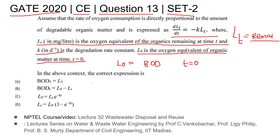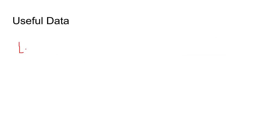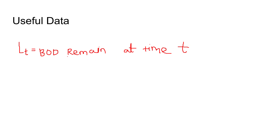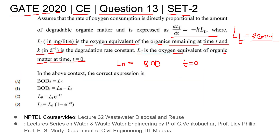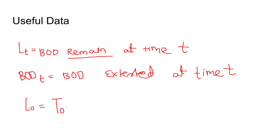Let me write down the terms explained by the question setter. LT is the BOD remaining at time T — this is the remaining BOD, not the exerted BOD. BOD_T will be the BOD exerted at time T. L0 is the total BOD.